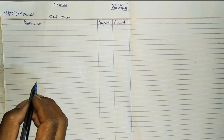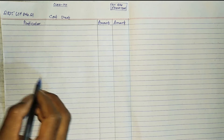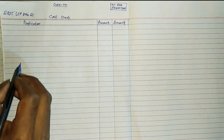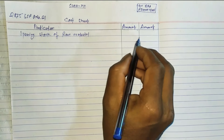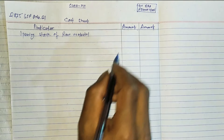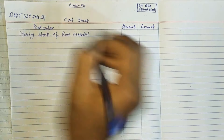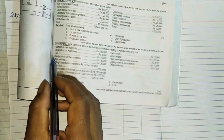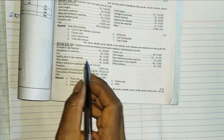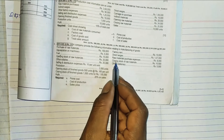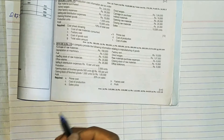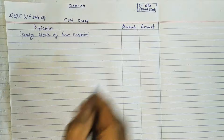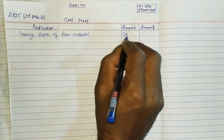We will discuss the stock of raw material. The opening stock of raw material is 20,000, and the closing stock of raw material is 15,000.